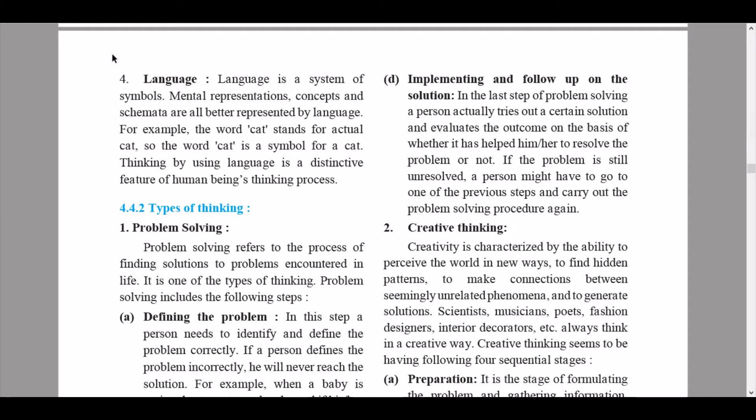The fourth core element is language. Language is a system of symbols. Mental representations, concepts, and schemata are all better represented by language. For example, the word 'cat' stands for an actual cat — the word is a symbol for the cat. Thinking by using language is a distinctive feature of human beings' thinking process.